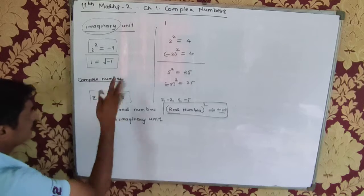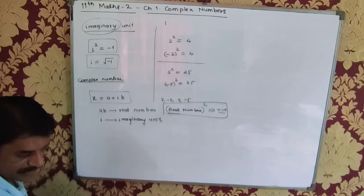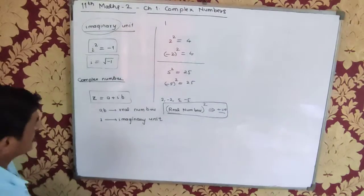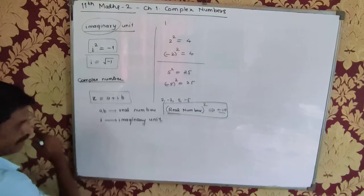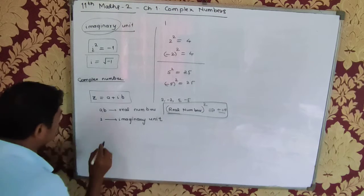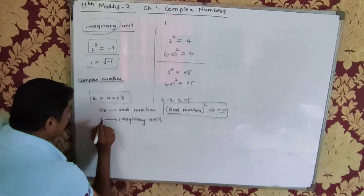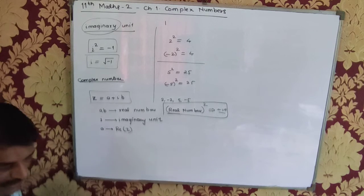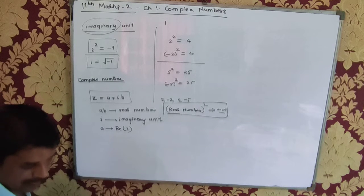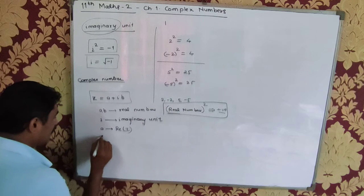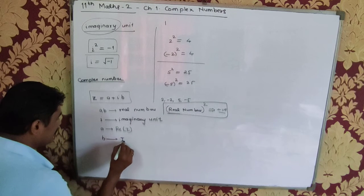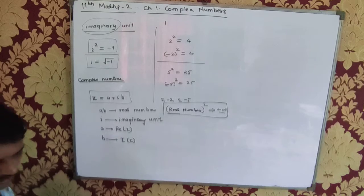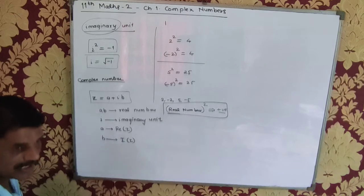So a and b are both real numbers, and this is denoted by z. Here, a is called the real part of z, and b is called the imaginary part of z, also written as Im(z).